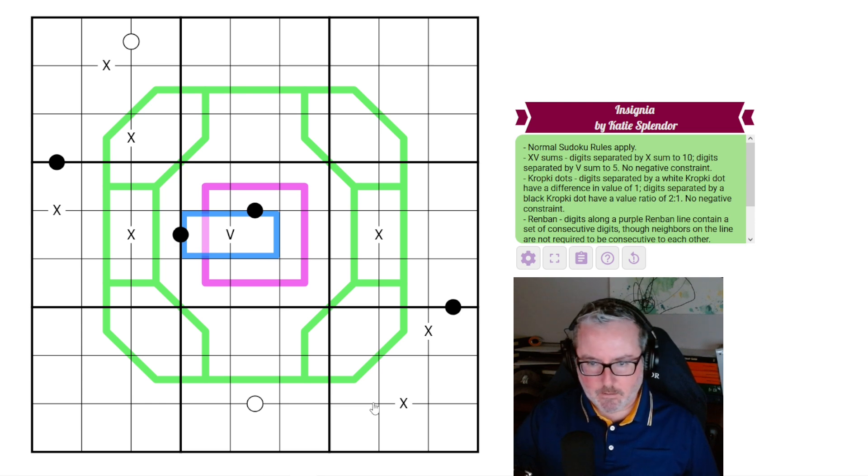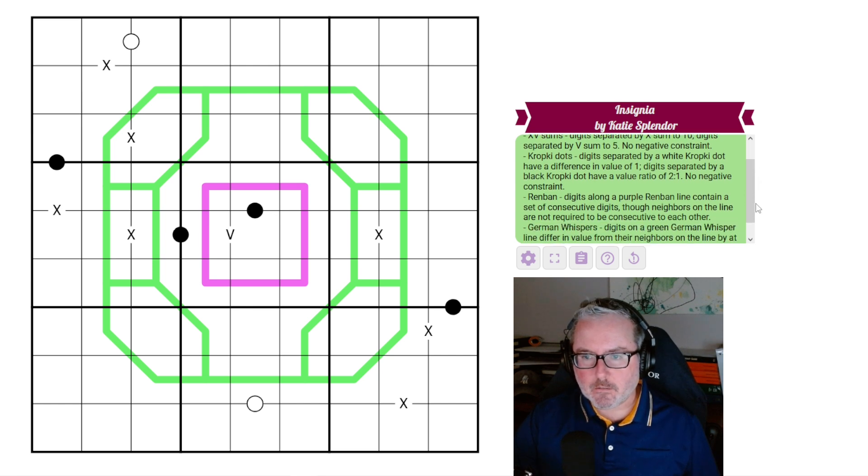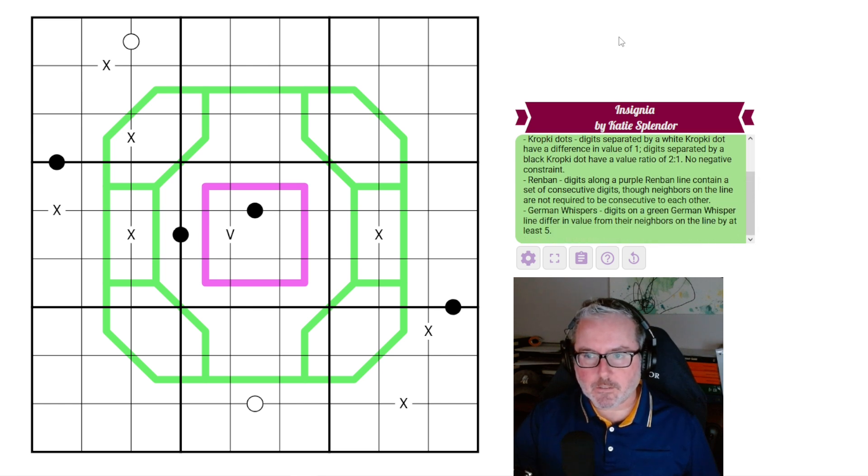So the Vs, and it actually just is this one. These two add up to 5, all of the 10s, whatever they may be, add up to 10. So all the Xs, 10s. Then we've got kropki dots. So digits separated by a white kropki dot have a difference in value of 1. Digits separated by a black kropki dot have a value ratio of 2 to 1. And again, no negative constraint.